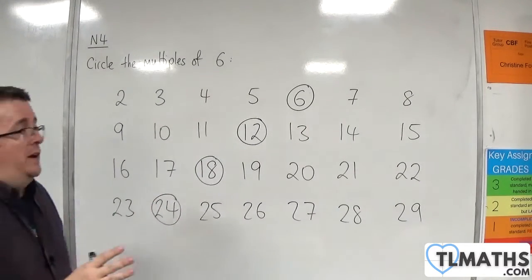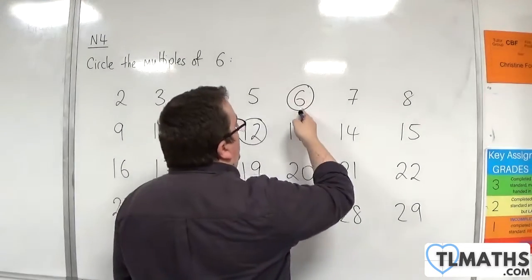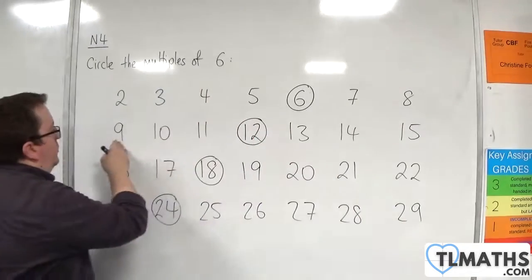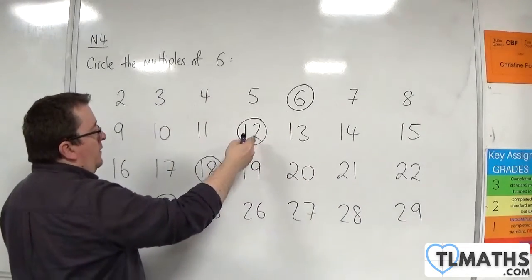Now, of course, what we could have done is, once we'd found 6, we could then go 1, 2, 3, 4, 5, 6. There's another one.